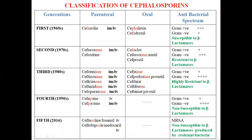Most parenteral cephalosporins are given by intramuscular and IV injections. The 1st, 2nd, and 3rd generation cephalosporins are given by both intramuscular and IV routes. The 4th and 5th generation cephalosporins are given by IV injections only, with the exception of Cefpirome, which can also be given by intramuscular injection.